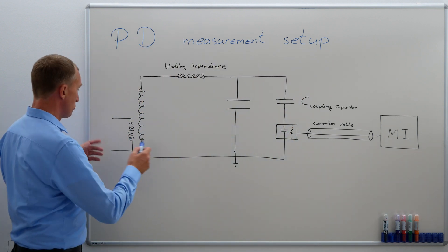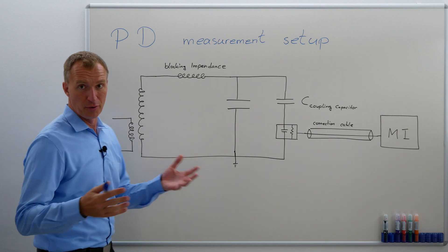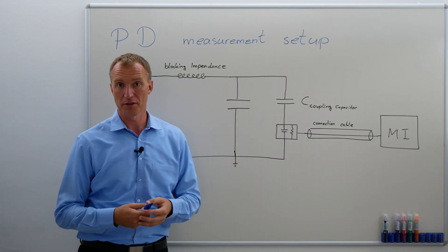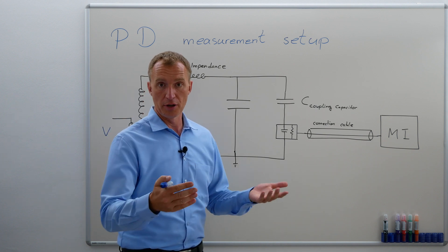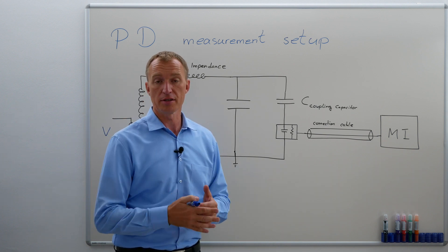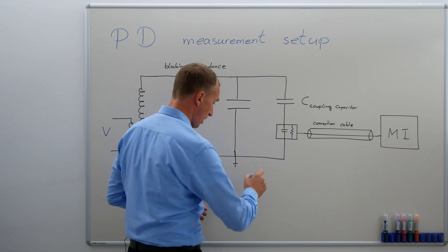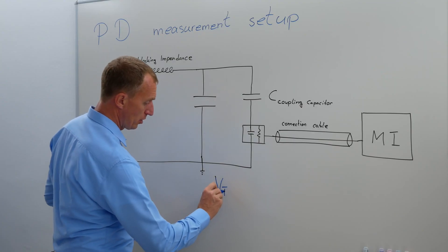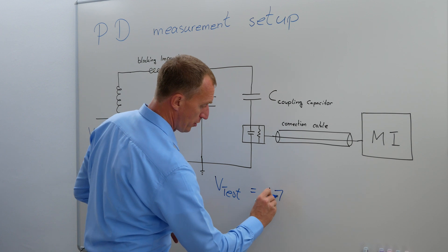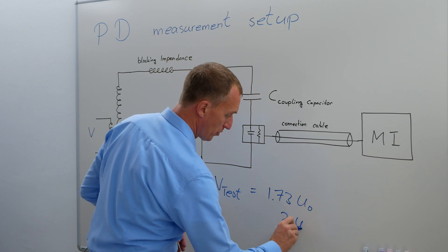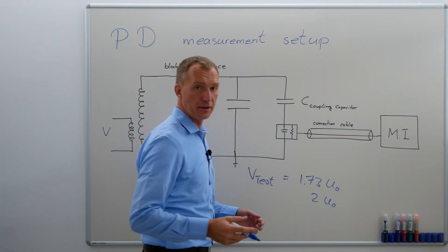First of all, we have a voltage source, and the voltage source should be a high voltage source because we're testing partial discharges with high voltages. We usually test them with nominal voltage U0, and as many standards demand, usually a little bit higher.